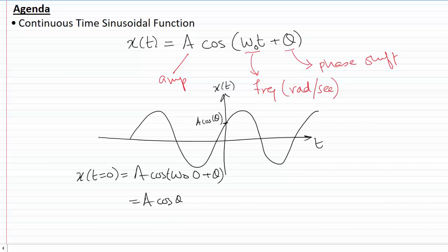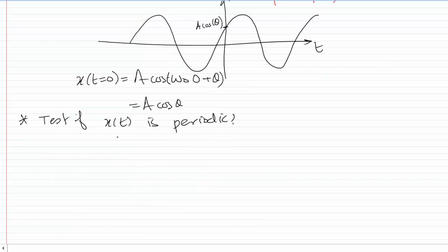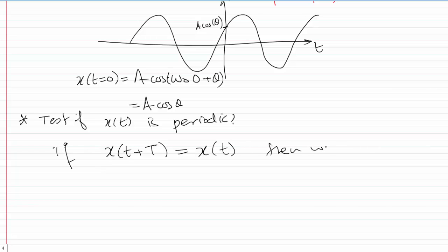Now the question one may ask is: is this sinusoidal a periodic signal or not? For more on periodic signals, I suggest you watch my videos on the topic — the link is provided in this video. To test if x(t) is periodic, and if so what its period is, we look at the figure and see there is some repetition. Mathematically, for x(t) to be periodic, x(t + T) must equal x(t).